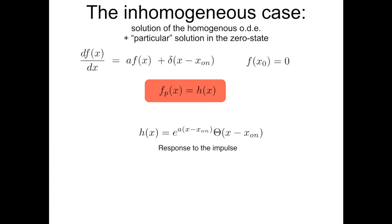Let me be more specific, extending on what I mentioned in a more intuitive way. Once the external input is a Dirac delta centered in x_on, the output is a specific function called the response to the impulse, which is coincident — with the exception of the initial condition — to the kernel of the solution of the homogeneous: exponential of a times (x minus x_on). This is shifted because the impulse was shifted, rigidly centered in x_on. Once you know the impulse response, it is enough to know the solution of the homogeneous equation to predict analytically the solution to any external input.